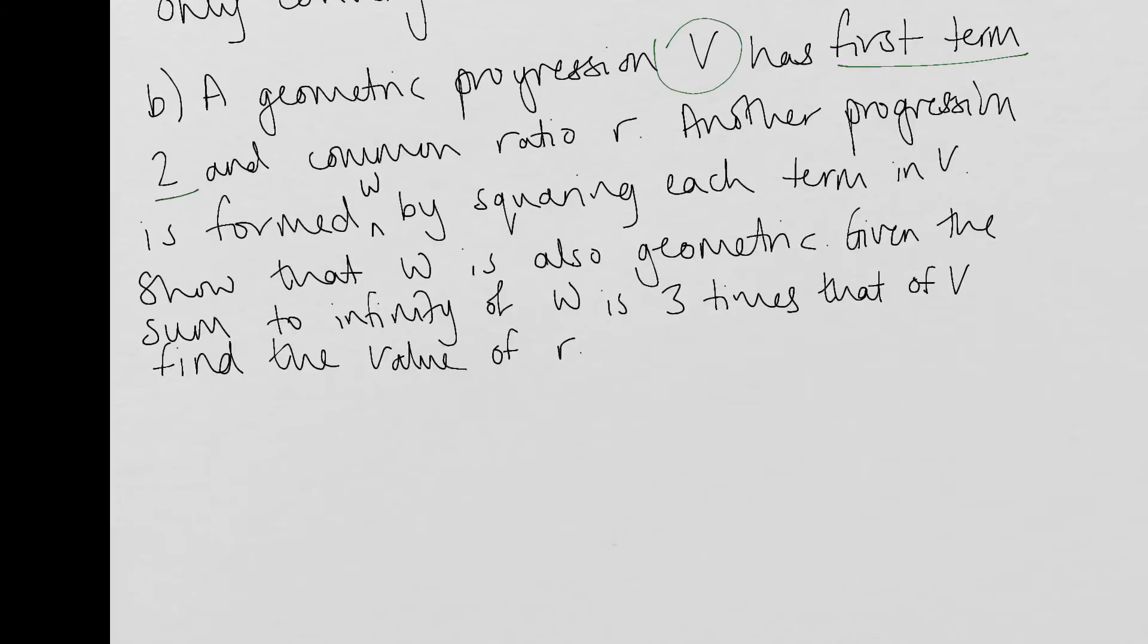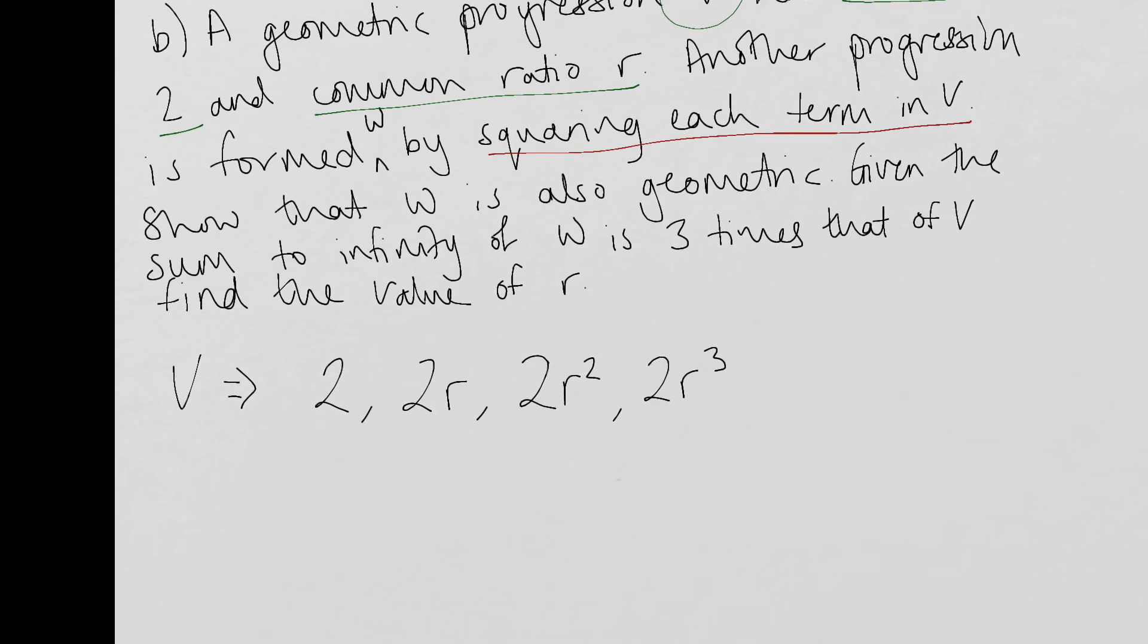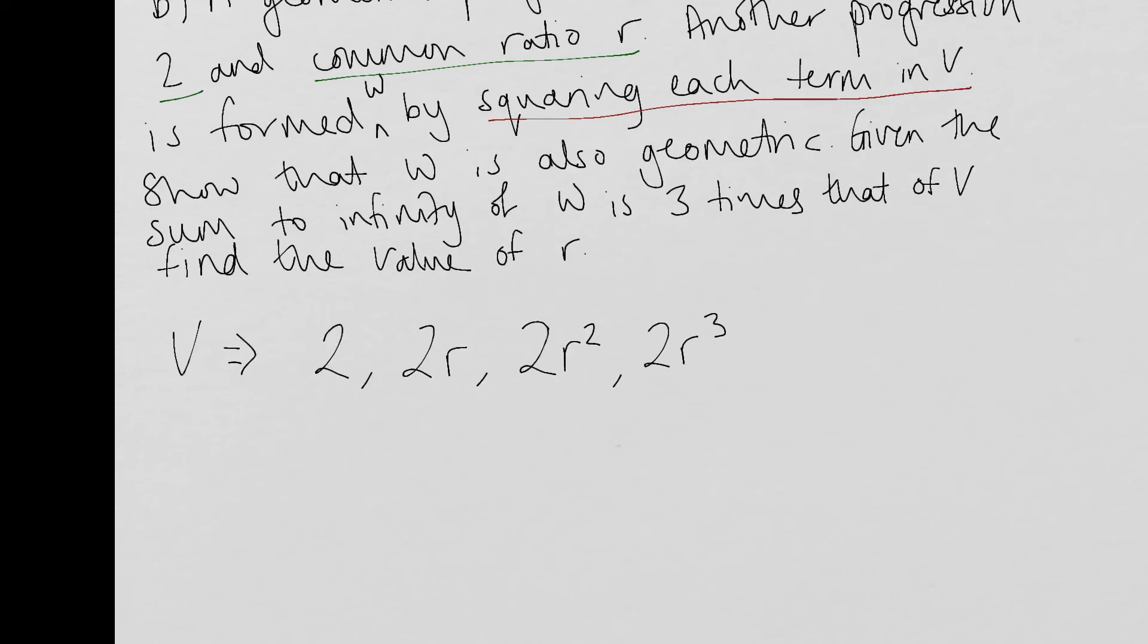So the geometric progression, V, has a first term of two and a common ratio of R. So if I write down V here, let's start with there. So the first term is two. And then I get the next term by multiplying that value by R. I'd get the next term by multiplying that by R. I'd get the next term by multiplying that by R. OK, so that seems to be all right. Another progression is formed by squaring each term in V. So let's try that part. So we're just taking this one sentence at a time.